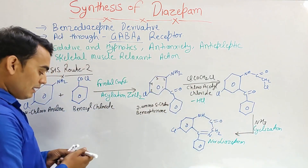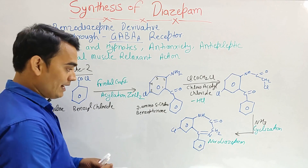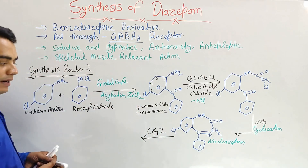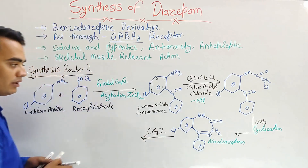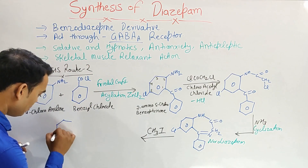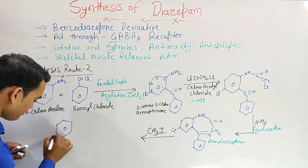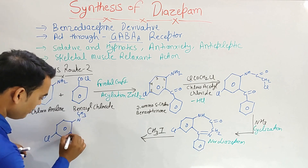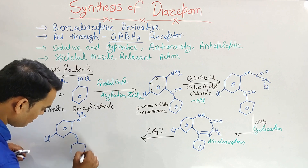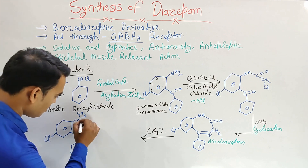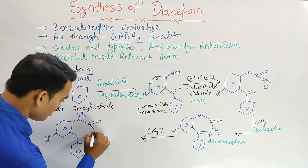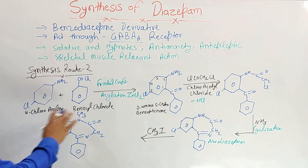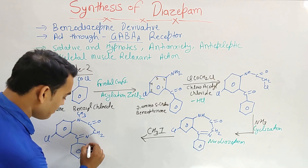When this nor-diazepam is reacted with methyl iodide (CH3I), the methyl group attaches on the nitrogen position and diazepam is formed. The structure has: Cl on the ring, N with CH3, C=N, CH2, and N — forming the benzodiazepine ring, as we discussed in the previous route.